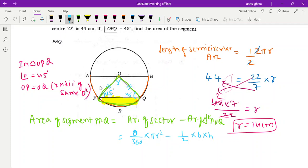In triangle OPQ, angle P is equal to 45, OP is equal to OQ (radii of same circle). So their opposite angles - angle P should be equal to angle Q, both equal to 45, because angle opposite to equal sides are equal.